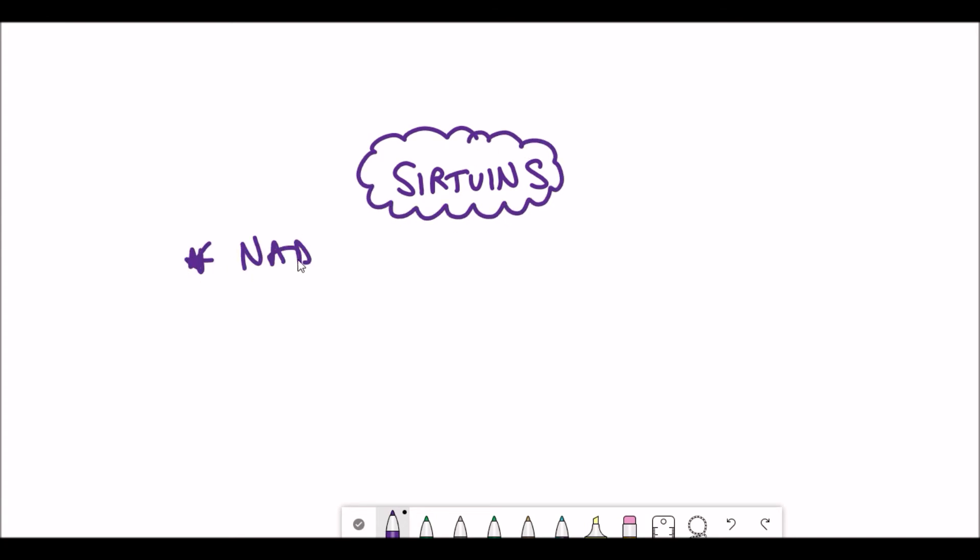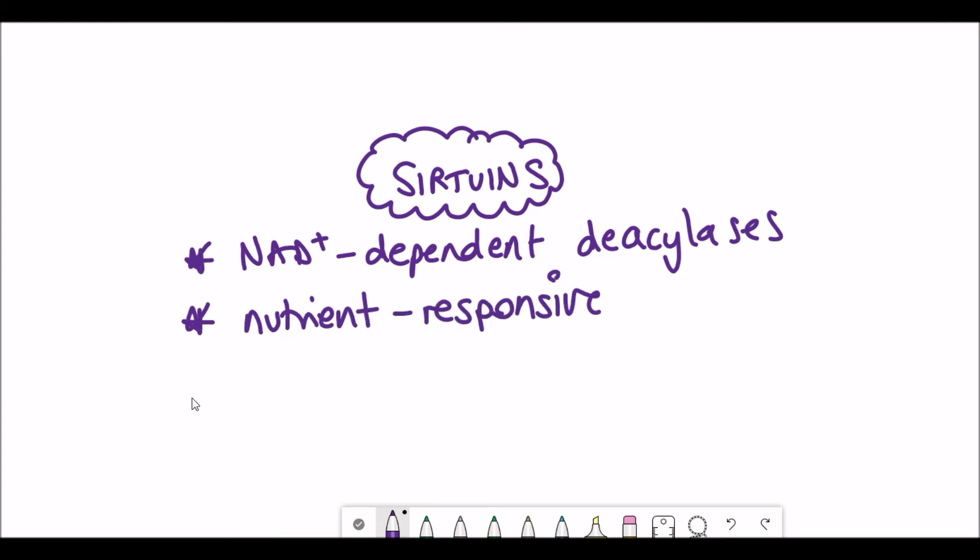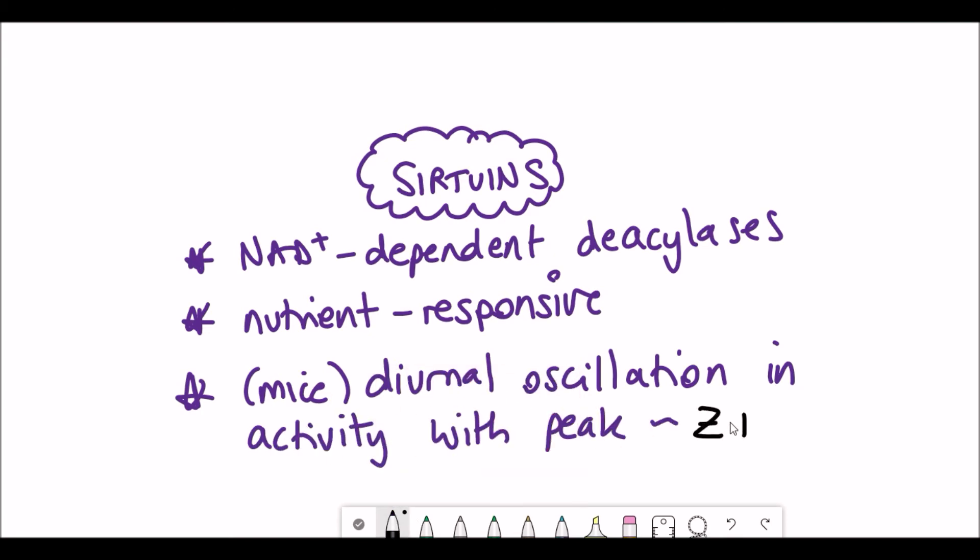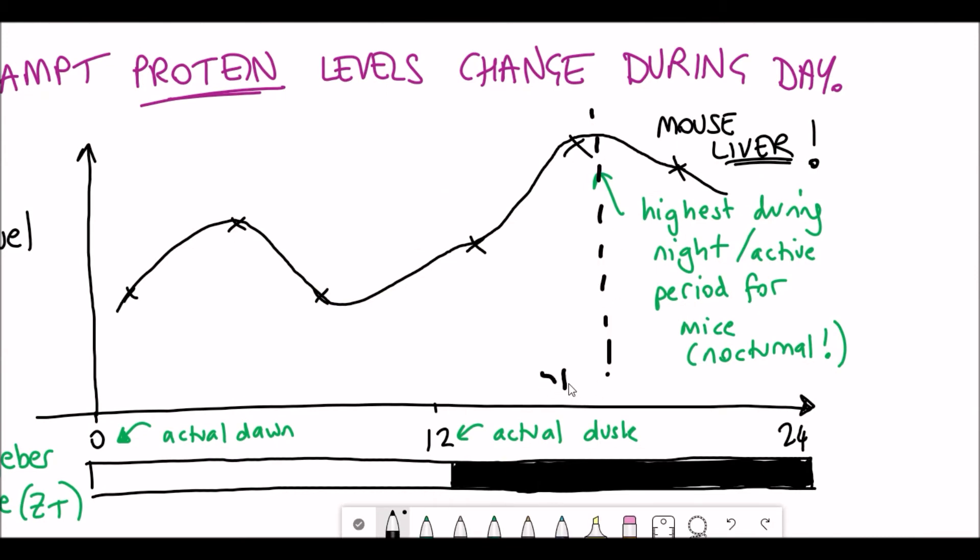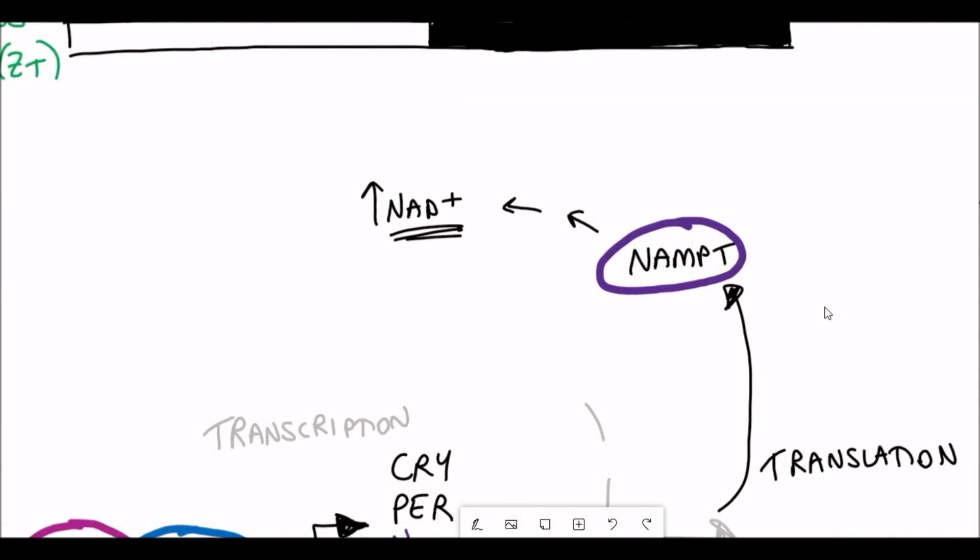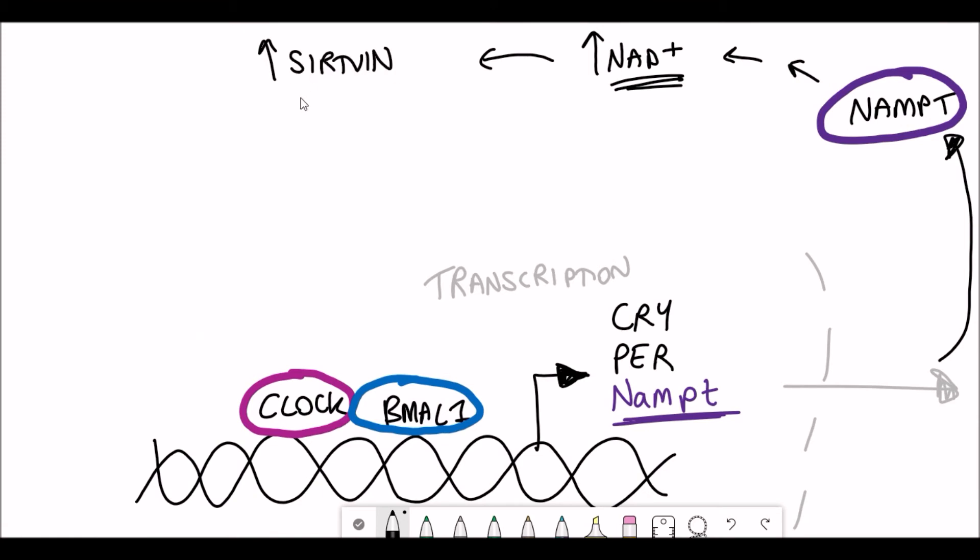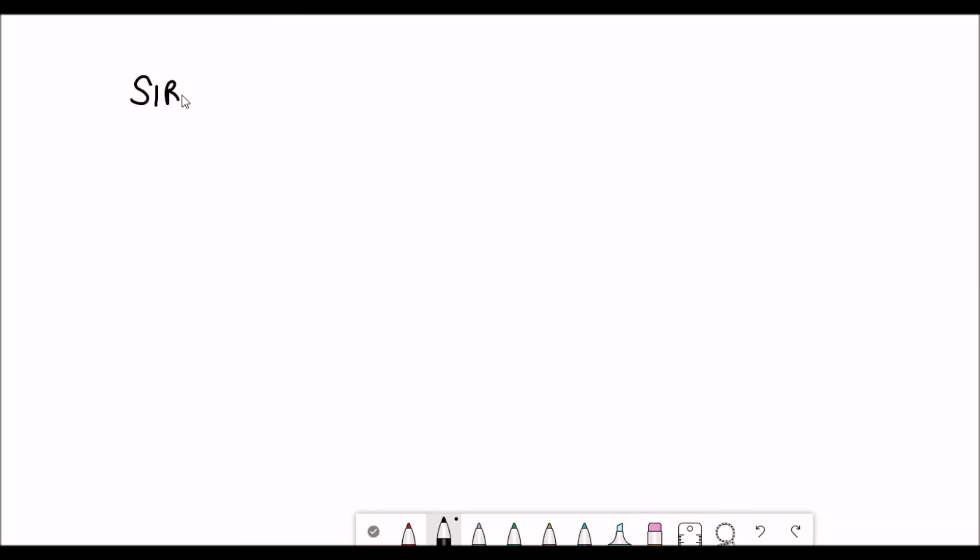So as I said, sirtuins are NAD+ dependent deacylases, and they respond to the nutrient levels in the cell because they require NAD+ for their activity. So it shouldn't be surprising then that there's also a circadian fluctuation in sirtuin activity. And so in mice, there's also a diurnal oscillation of the activity levels, and you have a peak activity at the zeitgeber time 15, which correlates with the highest peak in the NAMPT levels and the NAD+ levels. So if we go back to our map, we see that increased NAMPT increases NAD+, which increases sirtuin activity.